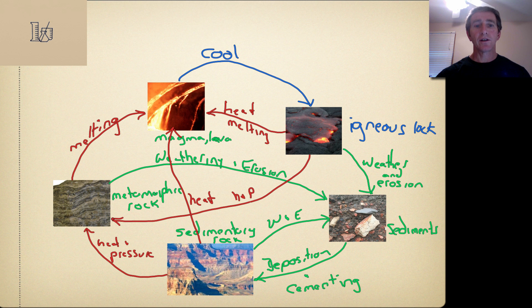At this point, I'd like you to realize there are five boxes with four arrows coming into and out of each box. Magma has four arrows, igneous rock has four arrows, sediments have four arrows, sedimentary rock has four arrows, and metamorphic rock has four arrows.